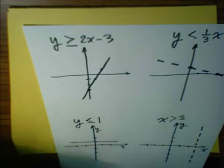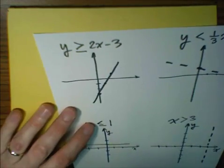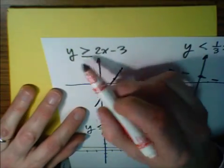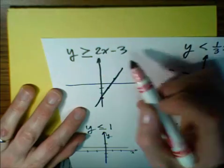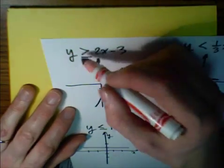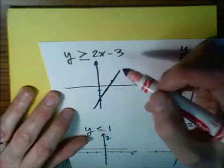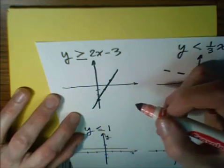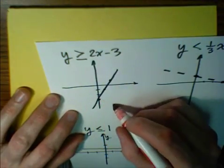We're going to try four simple examples first. So I've graphed partially these inequalities. y is greater than or equal to 2x minus 3. Well, here's the line, and it is a solid line, but let's first test a point. The easiest point anywhere on this coordinate axis is the point (0, 0).